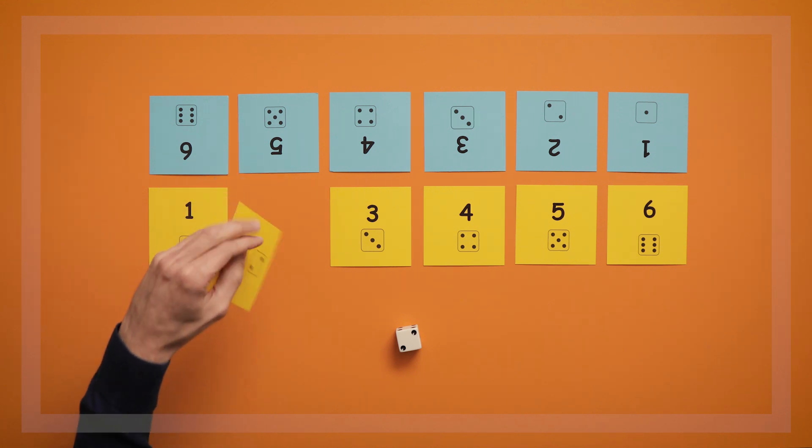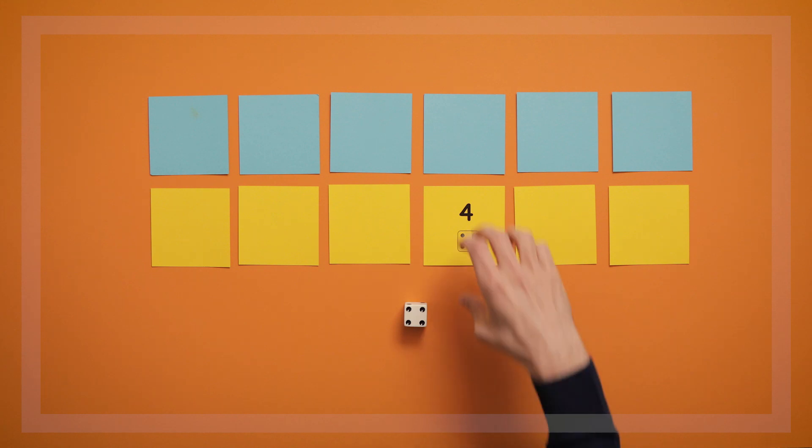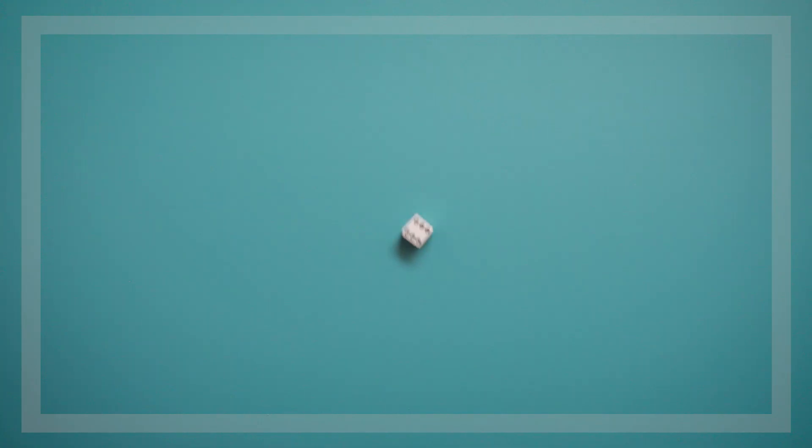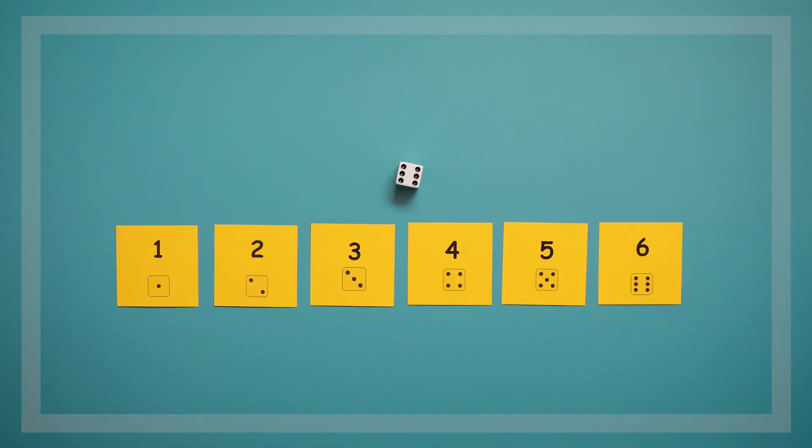In Roll 1, each player takes turns rolling one die until they've flipped over all their cards. To play Roll 1, we'll use one regular die and a set of cards with numbers 1 through 6 for each player.